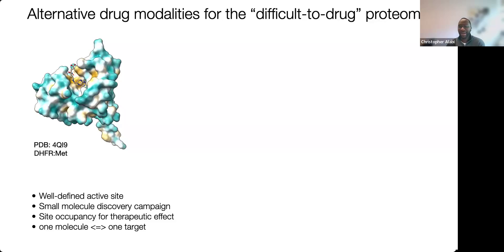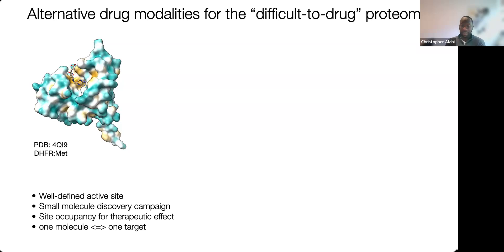I always like to get started with this slide: when you think about drugging some sort of a protein, say this dihydrofolate reductase, we often think of using a small molecule. In order to drug this protein target, we need a well-defined binding site — something we can hook onto, especially if the protein is an enzyme. This is the enzyme's active site. If you deliver a substrate or something that looks like a substrate to block that site, you can inhibit the activity of that protein. This is great for proteins that have well-defined binding pockets.